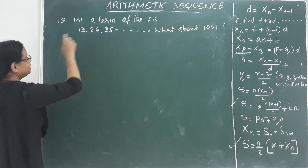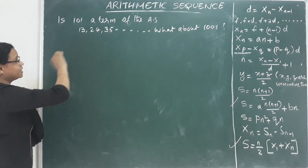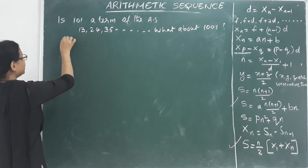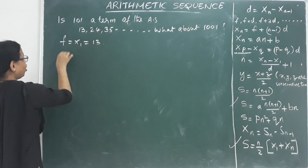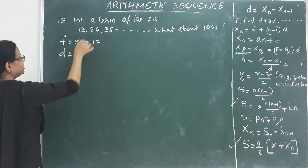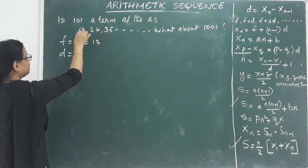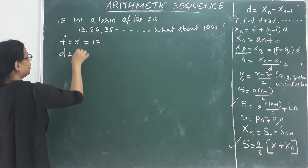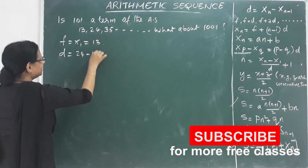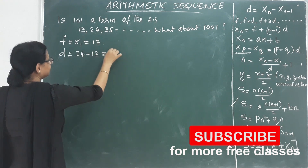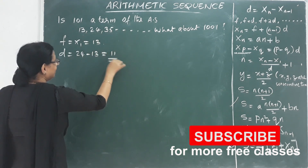We find the first term x1 equals 13. The common difference d equals x2 minus x1, that is 24 minus 13, which equals 11.